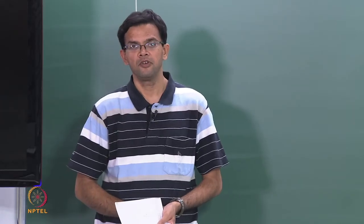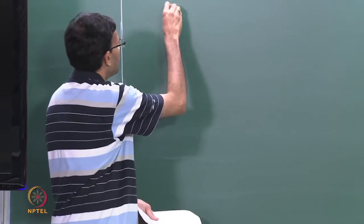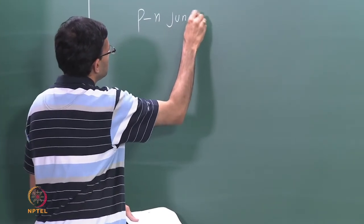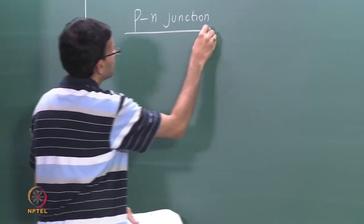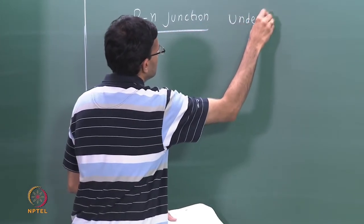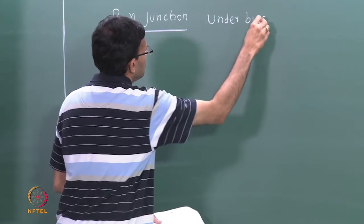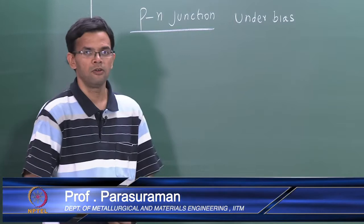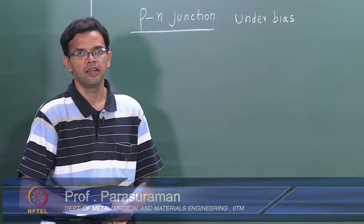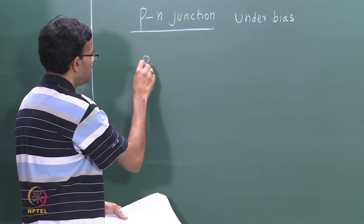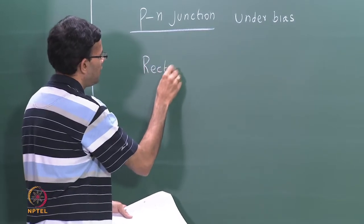Let us start with a brief review of last class. Last class we looked at a p-n junction under bias. We applied both a forward and a reverse bias and looked at the I-V characteristics. We found that a p-n junction is essentially a rectifier.